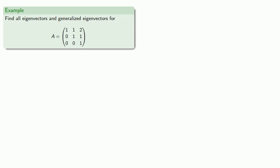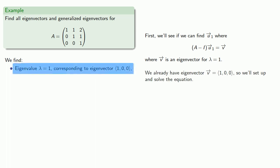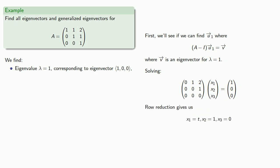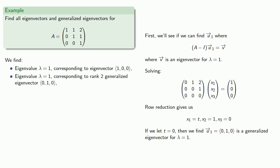Let's try to find all eigenvectors and generalized eigenvectors for a given matrix. We determine that the matrix has eigenvalue lambda equals 1 and corresponding eigenvector (1, 0, 0). First we'll see if we can find u1 where (A - I) u1 gives us v. We set up and solve the equation: (A - I) applied to some vector equals (1, 0, 0). Row reduction gives us a solution, and letting t equal 0 we find u1 = (0, 1, 0), a generalized eigenvector for lambda equals 1. Since (A - I) applied to this vector gives us the actual eigenvector, this is a rank 2 generalized eigenvector.